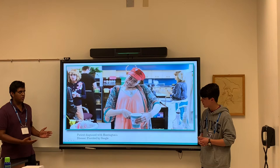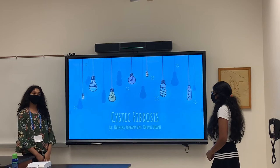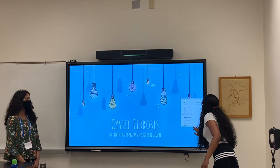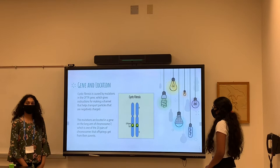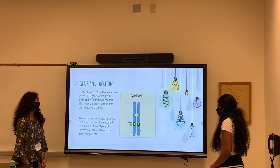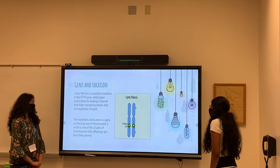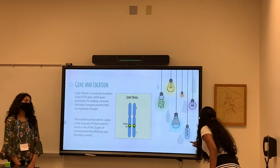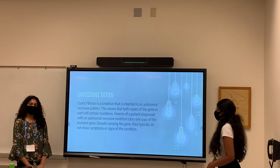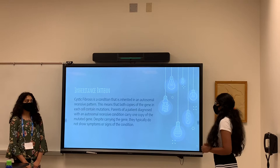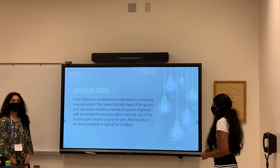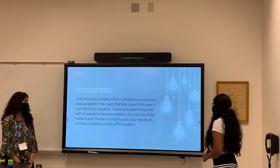Our presentation is about Cystic Fibrosis by Lennie and Kintana. Cystic Fibrosis is caused by mutations in the CFTR gene, which gives instructions for making a channel that helps transport negatively charged particles. The mutations are located on the long arm of chromosome 7, one of the 23 pairs of chromosomes inherited from parents. Cystic Fibrosis is inherited in an autosomal recessive pattern, meaning both copies of the gene in each cell contain mutations. Parents of a patient diagnosed with this disease carry one copy of it, but typically do not show symptoms.